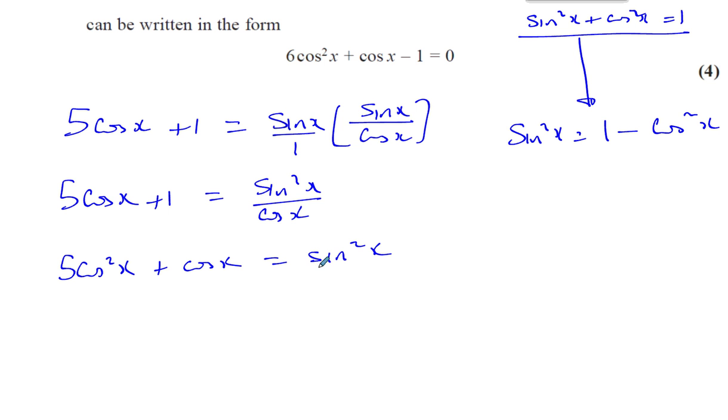So I can replace the sine squared x with 1 minus cosine squared x. So you have 5 times cosine squared x plus cosine x equals 1 minus cosine squared x. And we're almost there now.